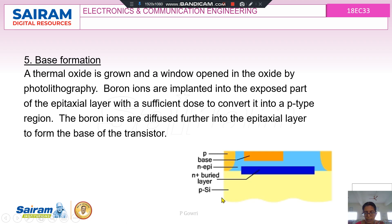We can see that there is a p-type substrate, then an N+ buried layer acting as a subcollector, followed by the epitaxial layer on which the p-type base will be formed. A thermal oxide is grown and a window is opened in the oxide by photolithography. Boron ions are implanted into the exposed part of the epitaxial layer with a sufficient dose to convert it to a p-type region, forming the base of the transistor.